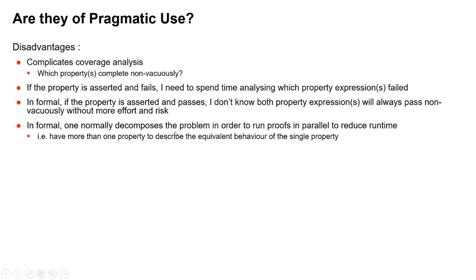Because in formal what you're trying to do is decompose the problem into simpler parts so that the proof will run quicker, not the other way around which is what OR does. If we've got a chance of defining behavior using one property or equivalent behavior using more than one property, then you always choose the multiple property approach because this means you can run them in parallel and then further improve run times.